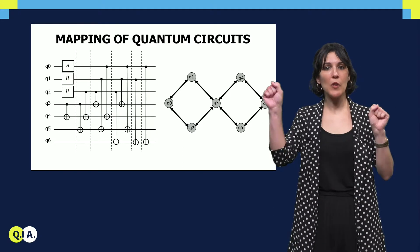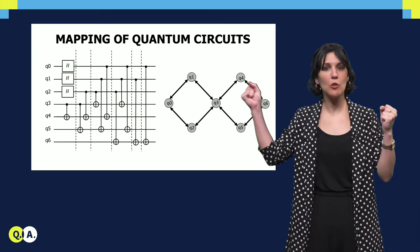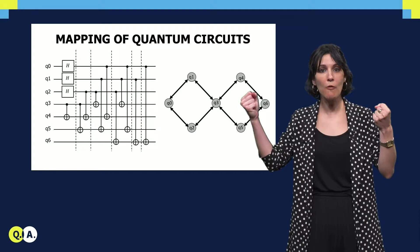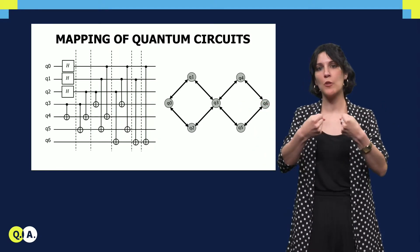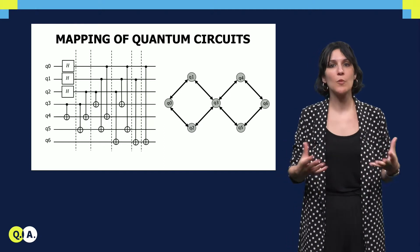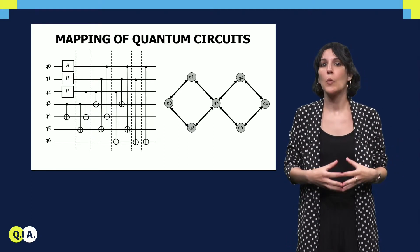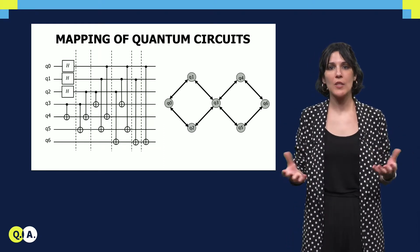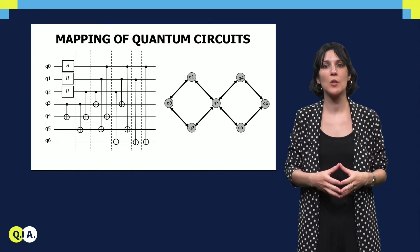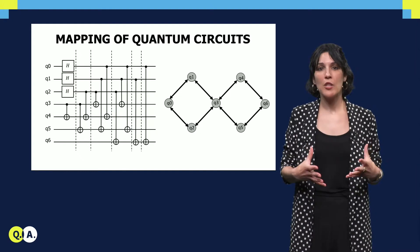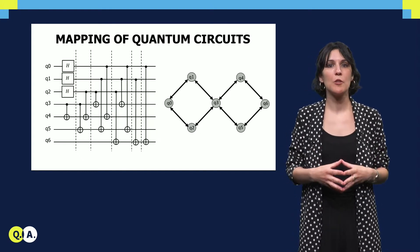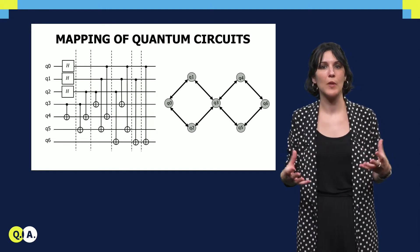This means that non-neighboring qubits, or qubits that are not connected to each other, need to be moved or routed to be placed in adjacent positions in order to perform a two-qubit gate. This movement or routing of qubits requires extra operations that need to be inserted into the circuit, as I will explain in the next example.